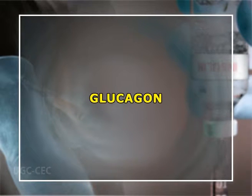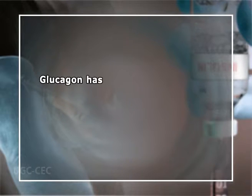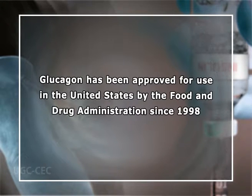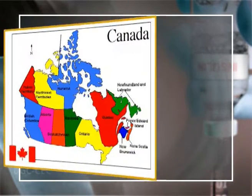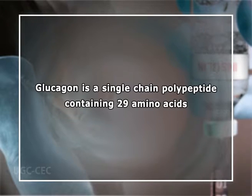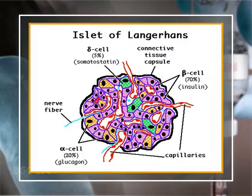Let's understand what glucagon is. Glucagon is a drug used to increase blood sugar levels. In recombinant form, glucagon has been approved for use in the United States by the FDA since 1998, and is also approved in Canada and the UK as glucagon hydrochloride. Glucagon is a single-chain polypeptide containing 29 amino acids. It is synthesized in the alpha cells of the islets of Langerhans from pre-pro-glucagon.